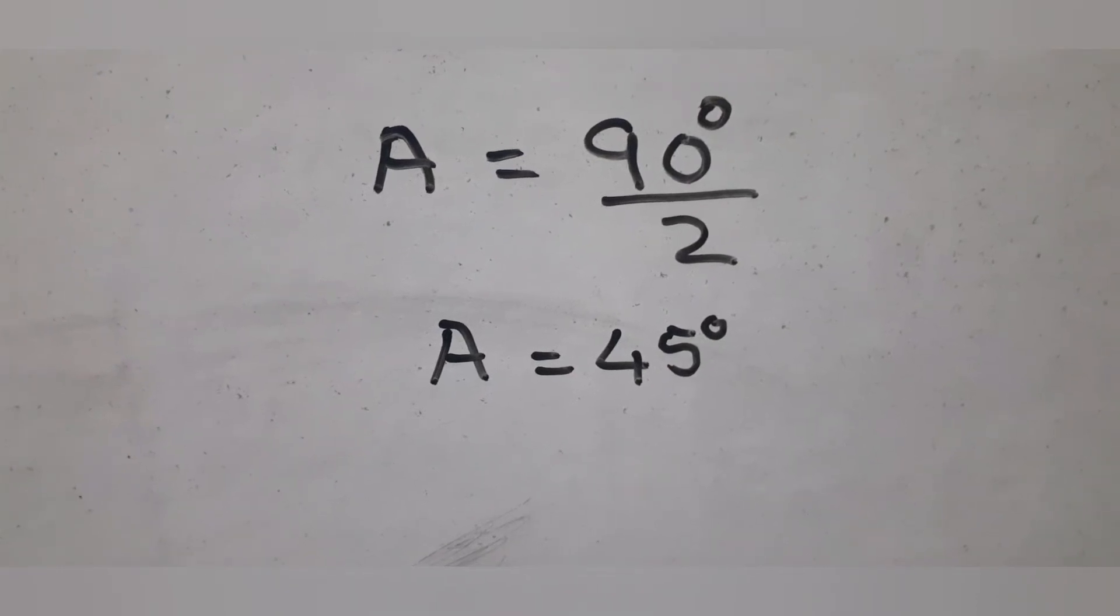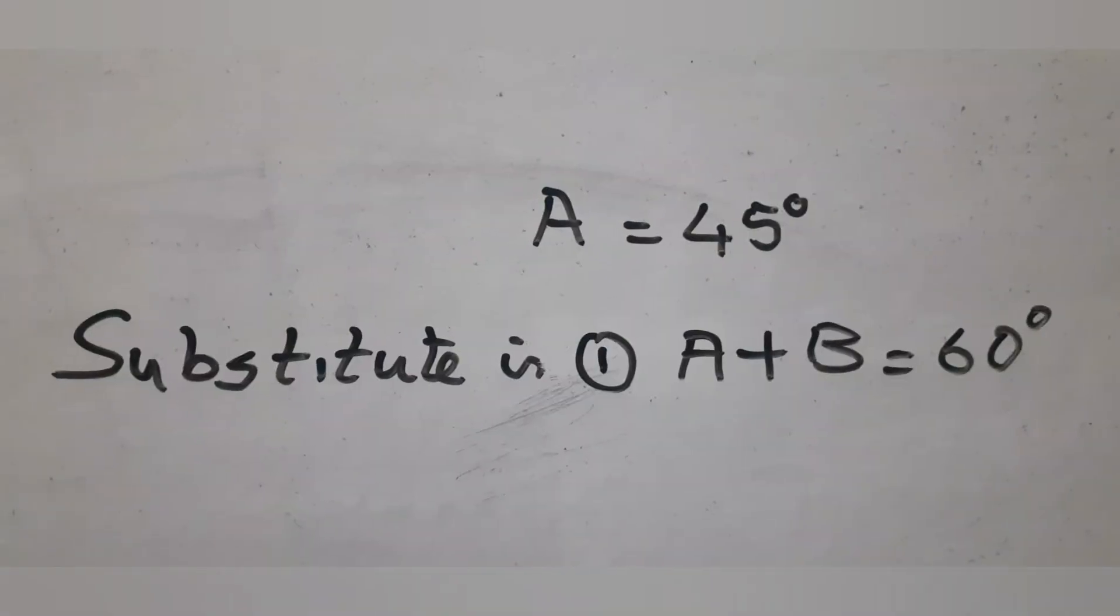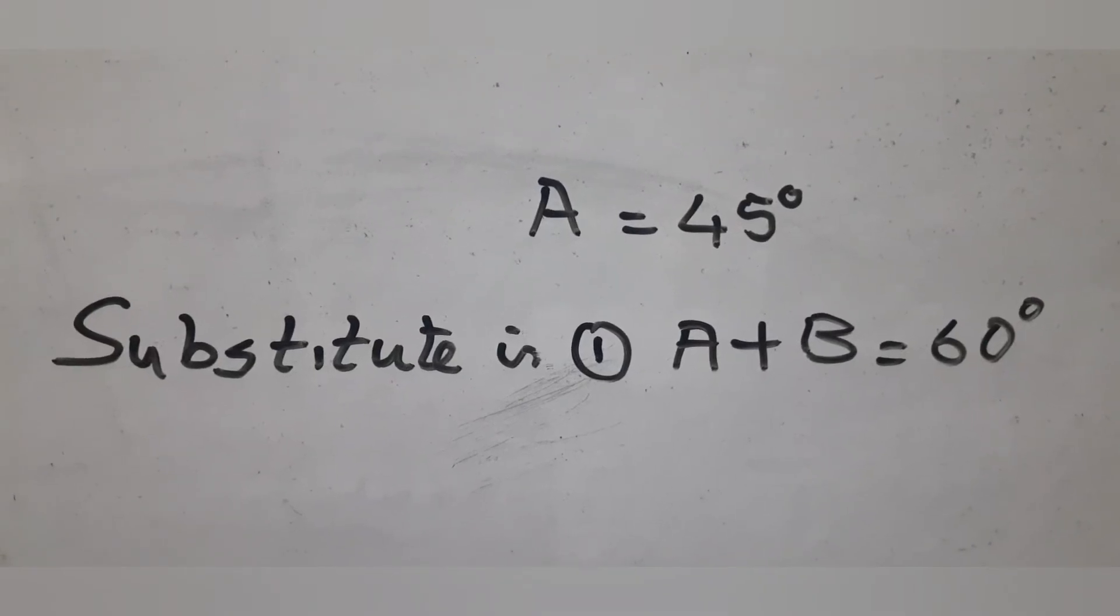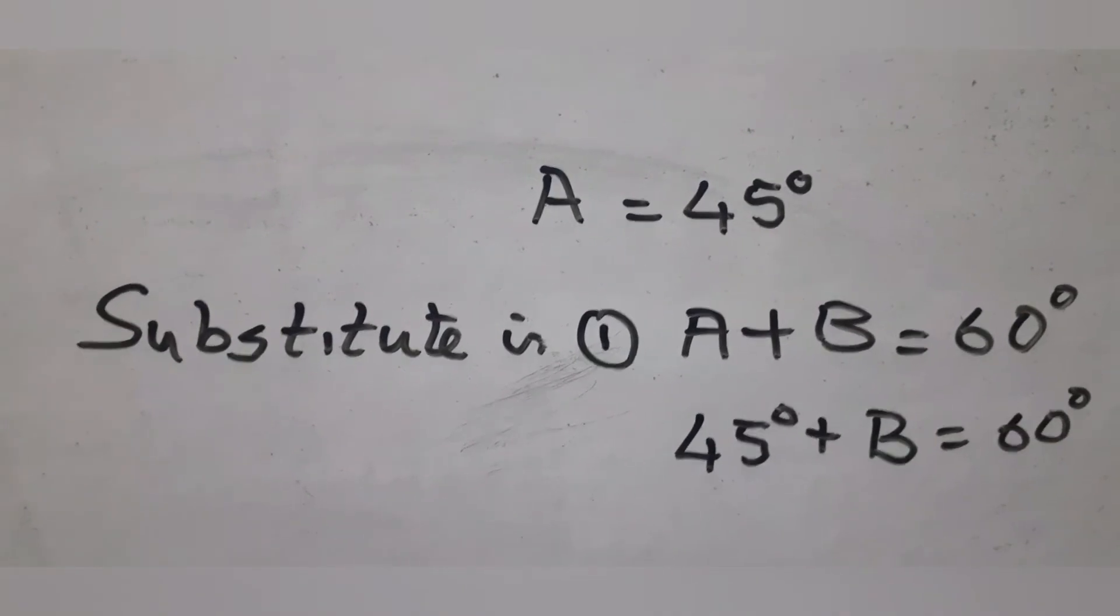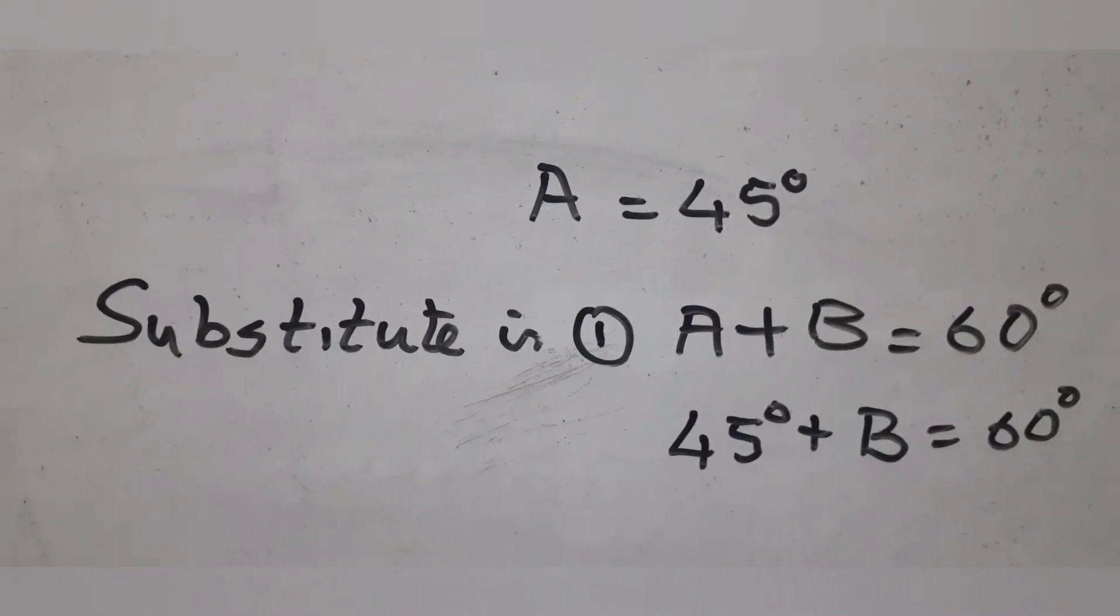We substitute this value for A into equation 1 to find B. So B = 60° - 45° = 15°.